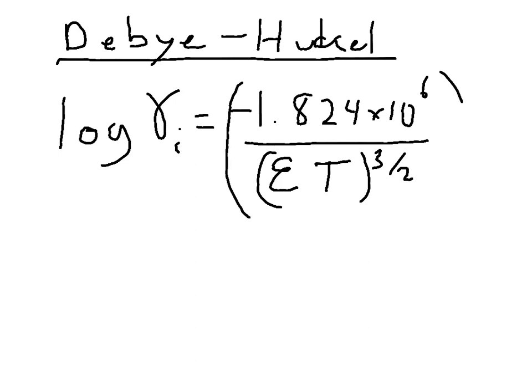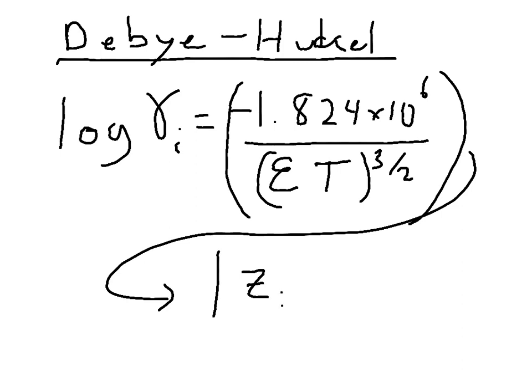And that is going to be multiplied times the charge squared of the ion that you're trying to get the activity coefficient for, times the square root of the ionic strength. So every time you want to calculate an activity coefficient, you'll need to know the ionic strength of the solution.